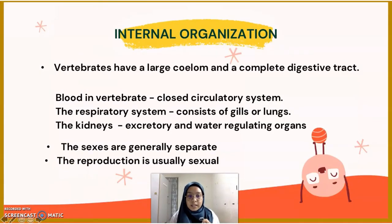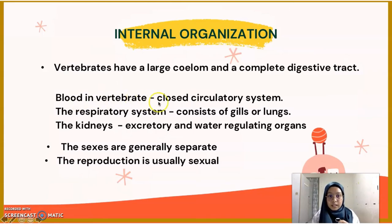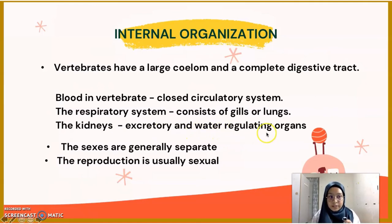The last characteristic is internal organization. Vertebrates have lungs and a heart as parts of a coelom, along with a complete digestive tract. Blood is contained in blood vessels, forming a closed circulatory system. The respiratory system consists of gills or lungs to obtain oxygen. Kidneys are important excretory and water-regulating organs. In internal organization, the sexes are generally separate and reproduction is usually sexual.